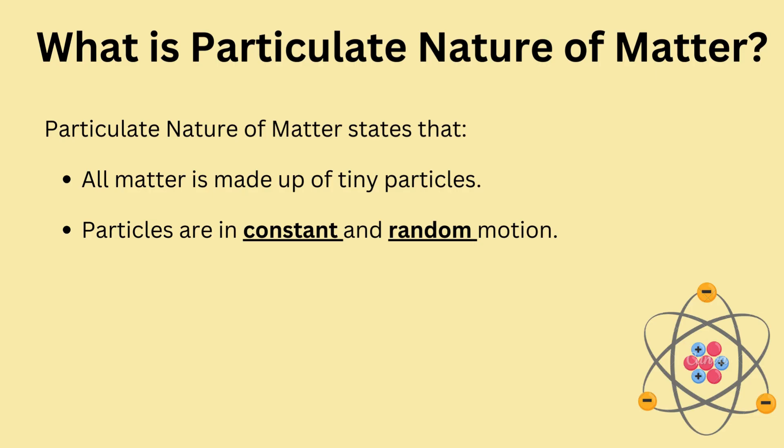The particulate nature of matter states that all matter is made up of tiny particles which are in constant and random motion. Constant means non-stop and continuous. Random means unpredictable. The speed of particles depends on the amount of kinetic energy.